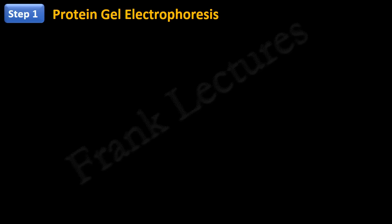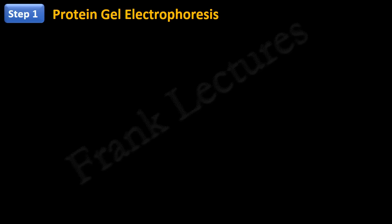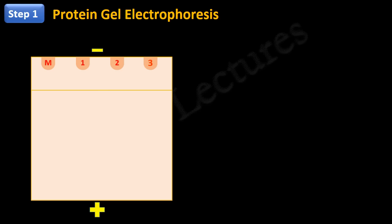These protein samples are separated into their component proteins by gel electrophoresis. Most widely used technique for protein electrophoresis is sodium dodecyl sulfate polyacrylamide gel electrophoresis.